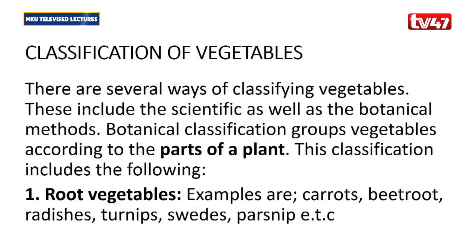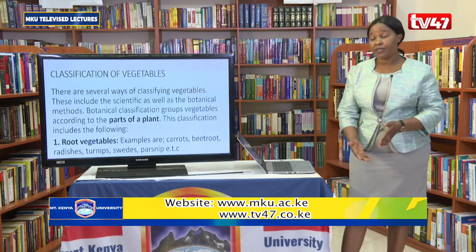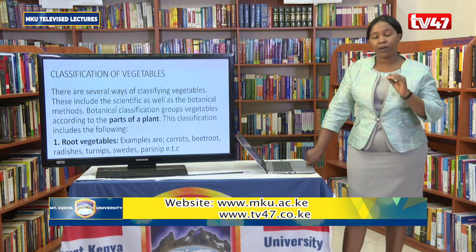Now let's look at the classification of vegetables — the types or categories that exist. There are many ways to classify vegetables. We have the scientific method, but because we are looking at food production in the food service industry, we borrow from botanical classification. Botanically, we classify vegetables according to the part of the plant — the flower, fruits, stems, shoots, and roots. This botanical classification is what helps a chef understand the type of vegetable.